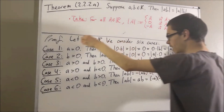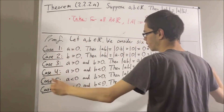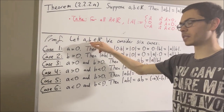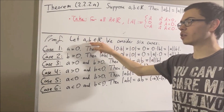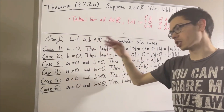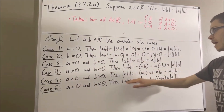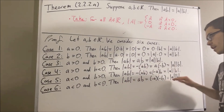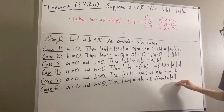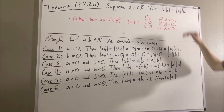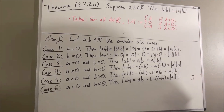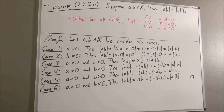These cases are exhaustive, meaning when we give ourselves two arbitrary real numbers A and B, one of these has to be true. So it follows that the absolute value of A times B is equal to the absolute value of A times the absolute value of B, which is exactly what we wanted to prove. And so this completes the proof.